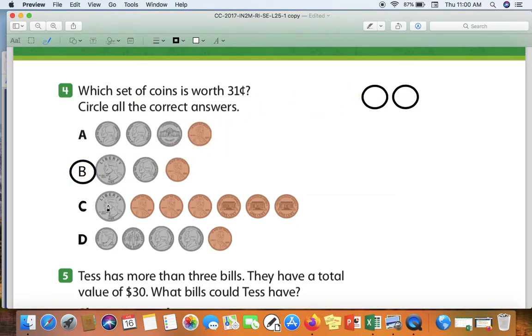Here we have a quarter and one, two, three, four, five, six pennies. So we're going to start with our big value coin here, our quarter. Twenty-five, and we're going to count it by ones. Twenty-five, twenty-six, twenty-seven, twenty-eight, twenty-nine, thirty, thirty-one. It does equal thirty-one cents, so we're going to mark it as a correct answer.